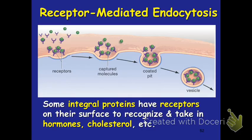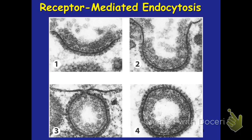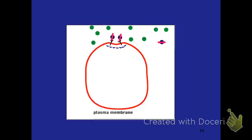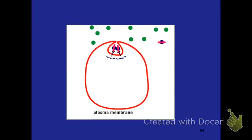Receptor-mediated endocytosis means that sometimes we have receptors on the surface of our membrane, and the molecule has to bind to the receptor to be brought into the cell. This is going to be the case for certain hormones, cholesterols, and things that need to be brought into the cell. You can see the two molecules — once they fit into their receptors, that signals them to be brought into the cell.